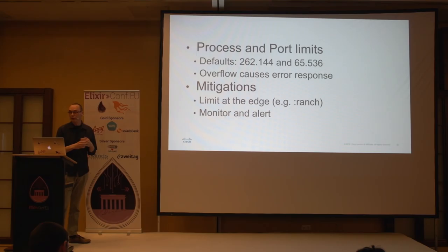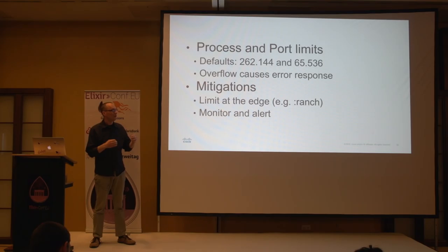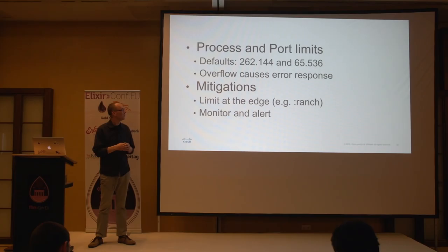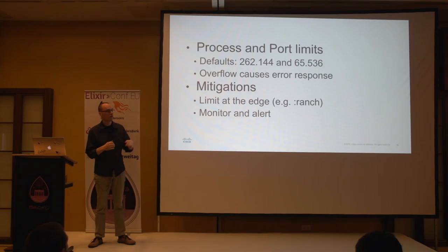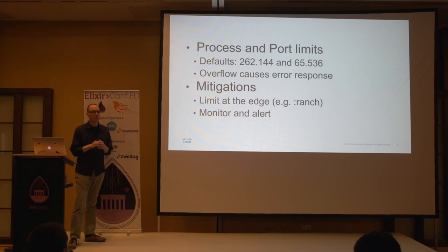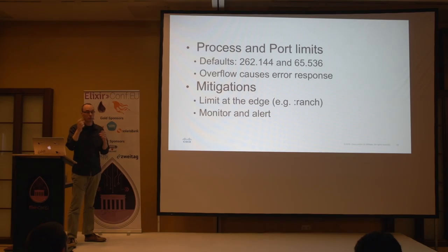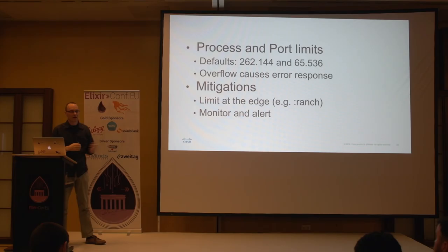Processes and ports also have limits, so you need to tune those parameters when starting your virtual machine. You won't crash the VM if you run out of ports, but your internal processing might require a process and if too many clients are taking up all the ports, you can't start those internal processes and your application degrades. So limit the number at the edge — Ranch, which lives under Cowboy under Phoenix, has an option to limit the maximum number of connections. Keep it well below the port limit configured at your VM level so you have some spare capacity for internal processing and error handling. Also monitor it — introspection functions let you see the current and maximum numbers.